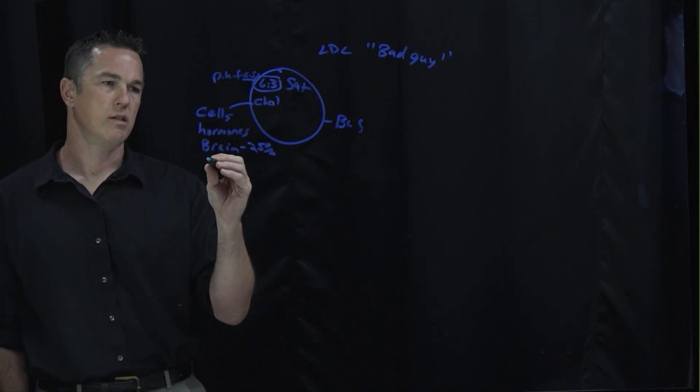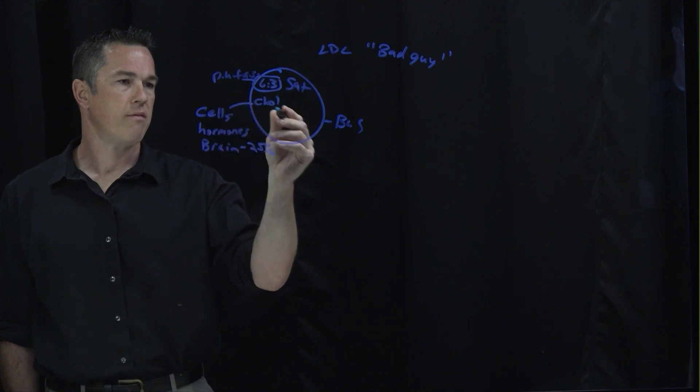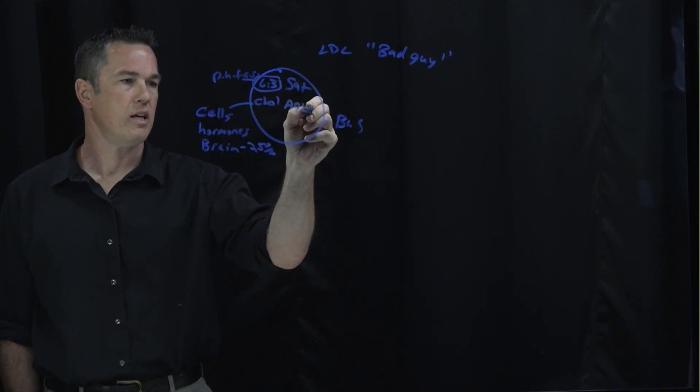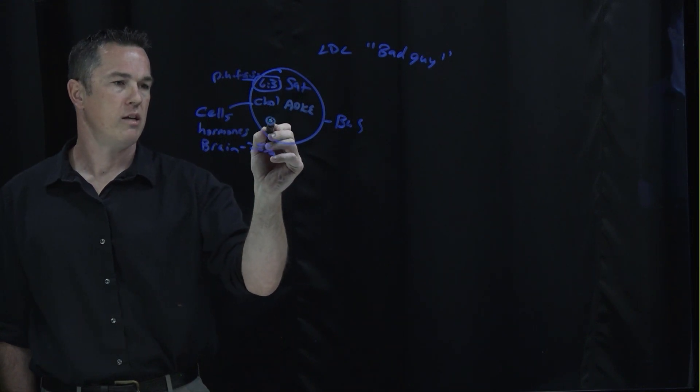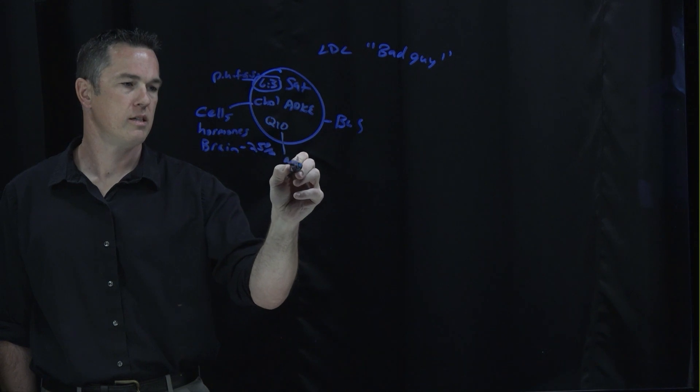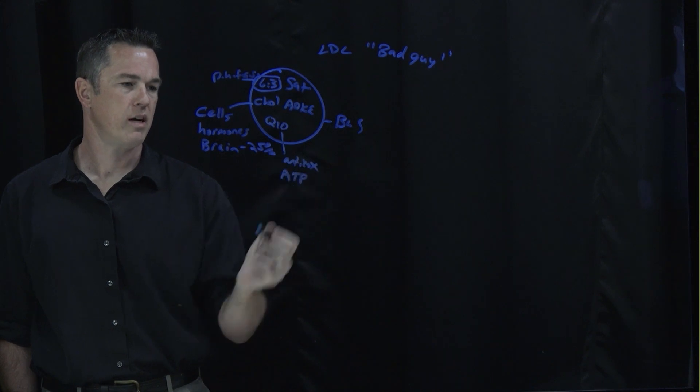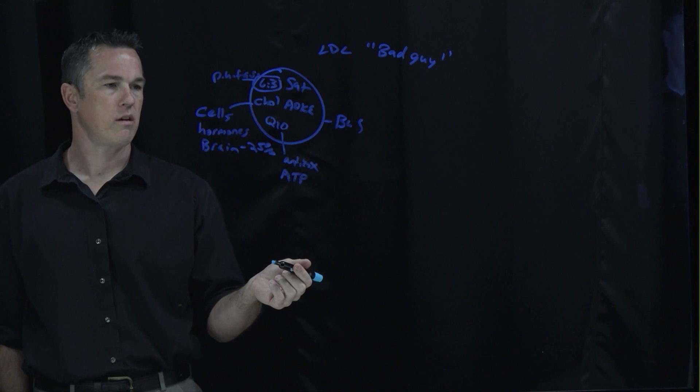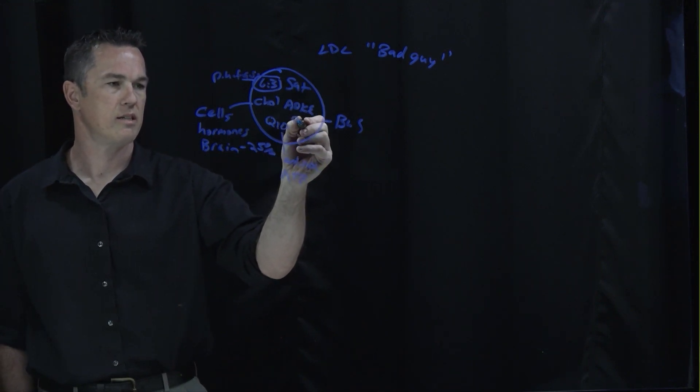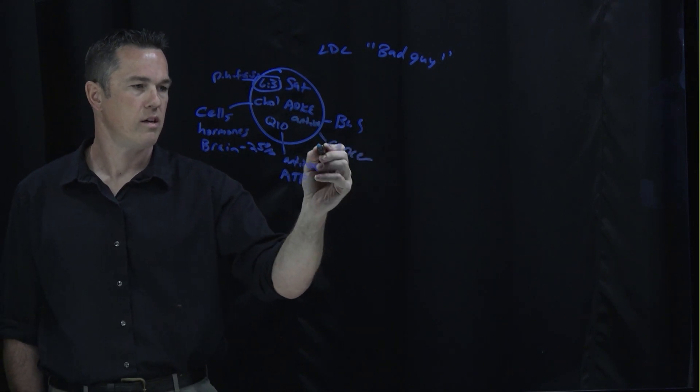And then we've got fat-soluble vitamins A, D, K, and E. We've got coenzyme Q10. Now coenzyme Q10 is an antioxidant and it's also inside your mitochondria, which is the powerhouse of the cell, to help make ATP. So we need this to be delivered to our cells in order to help them function. And then it's got antioxidants. Antioxidants fight cancer, they fight infection, and they fight something called oxidative stress.